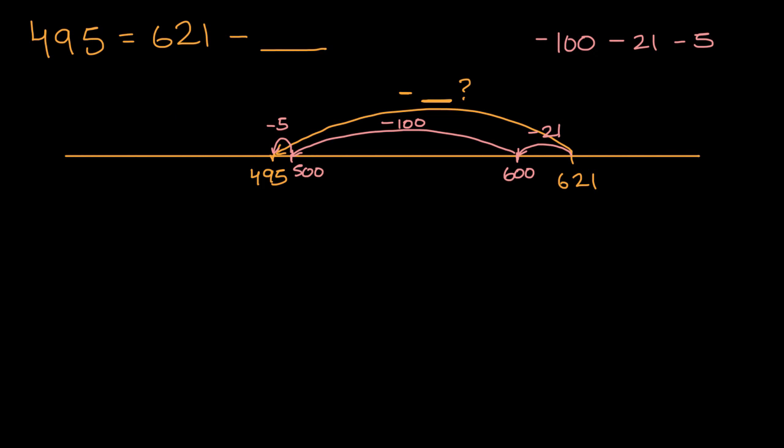So let me just put it this way. This is the same thing as 621 minus these things. That's equal to 495. So in total, let's see, if I subtract 21 and I subtract 5, that is subtracting 26.